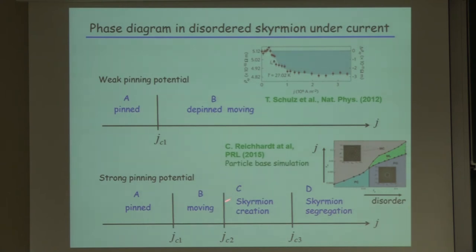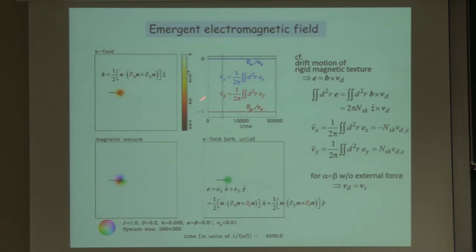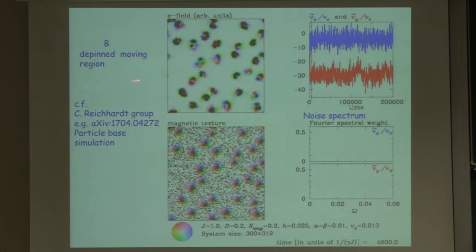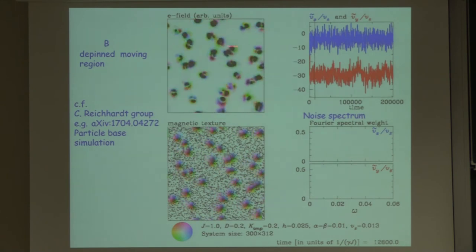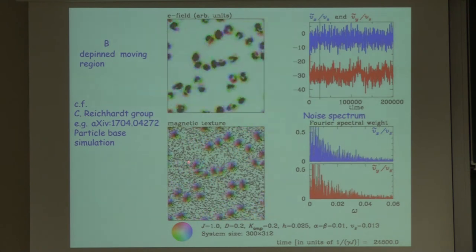Question from audience: Are they created from pinning centers as a skyrmion–antiskyrmion pair? Answer: I will show you the real movie. What we measure is the so-called emergent electric field. Once a skyrmion moves, it creates a voltage drop in the emergent electric field. We integrate this small E-field, which measures the velocity of skyrmions. We start from a triangular crystal, relax due to the impurity potential, and apply the current. Then it begins to move.